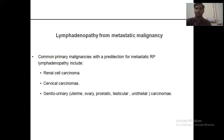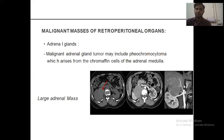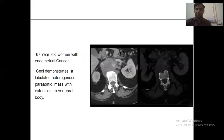Lymphadenopathy from metastatic malignancy: common primary malignancies with a predilection for metastatic retroperitoneal lymphadenopathy include renal cell carcinoma (RCC), cervical carcinoma, and genitourinary carcinoma. Malignant masses of the retroperitoneal organs — adrenal gland: malignant adrenal gland tumors may include pheochromocytoma, which arises from the chromaffin cells of the adrenal medulla. A large adrenal mass is demonstrated in a 67-year-old woman with endometrial cancer, where CT demonstrates a lobulated heterogeneous paraaortic mass with extension to the vertebral body.